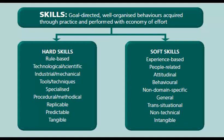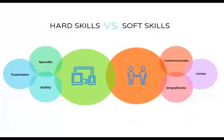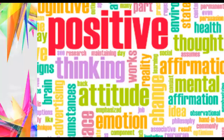Soft skills cannot be taught, whereas hard skills are generally taught to a person. Soft skills can be practiced and developed with time. Hard skills are teachable, specific, and show your ability — the things you can do — whereas soft skills are required to deal with other people, like communicating, listening, leadership, and flexibility. This is the key difference between hard skills and soft skills.